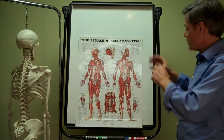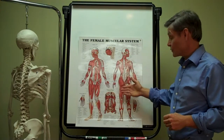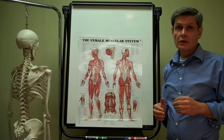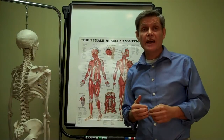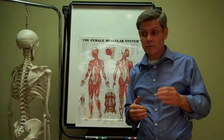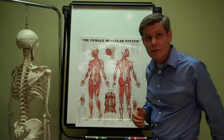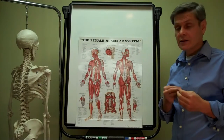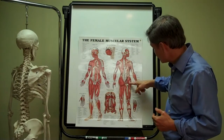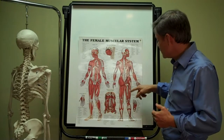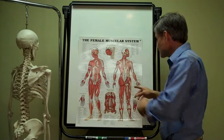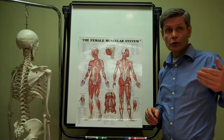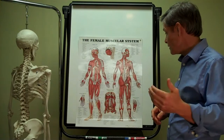Then we go down into the lower extremity and we talk about the gluteal muscles, or the butt muscles. This is very important if you want to be able to help people with sciatica — sciatic type pain, which is the pain that radiates down the back of the leg. Quite often, sciatic pain has to do with imbalances with one or more muscles of the gluteal region, in particular the deeper muscles of this region. We'll learn those muscles very thoroughly and then you'll learn how to treat them in the technique class.